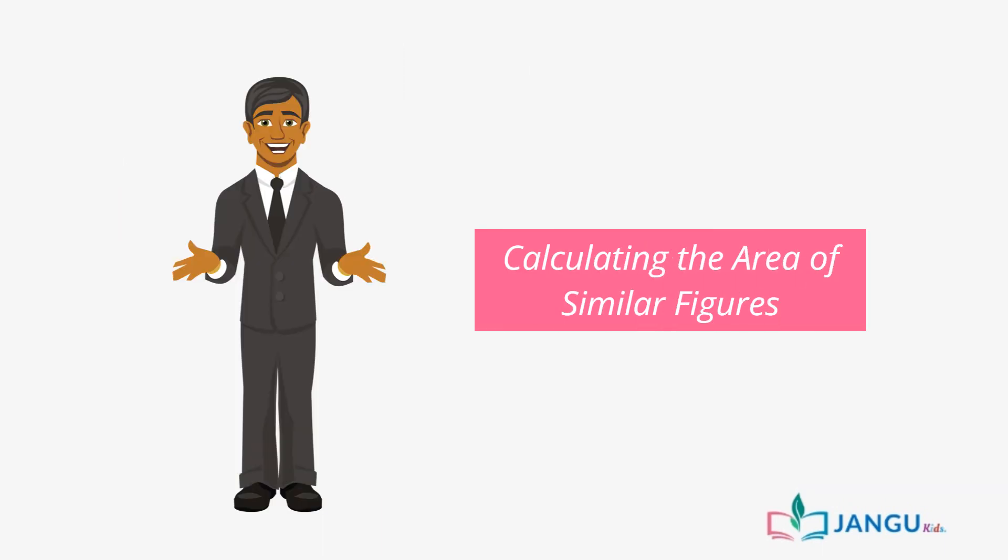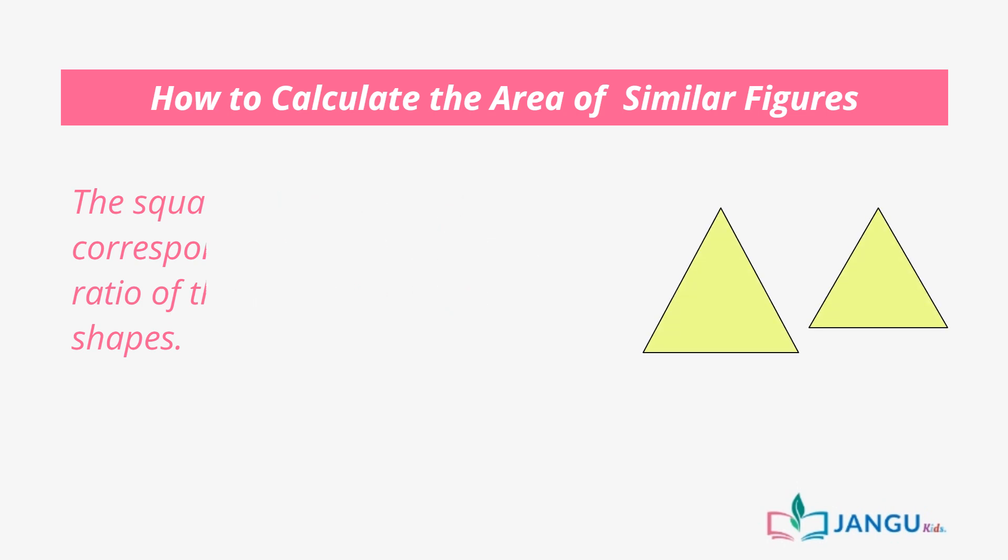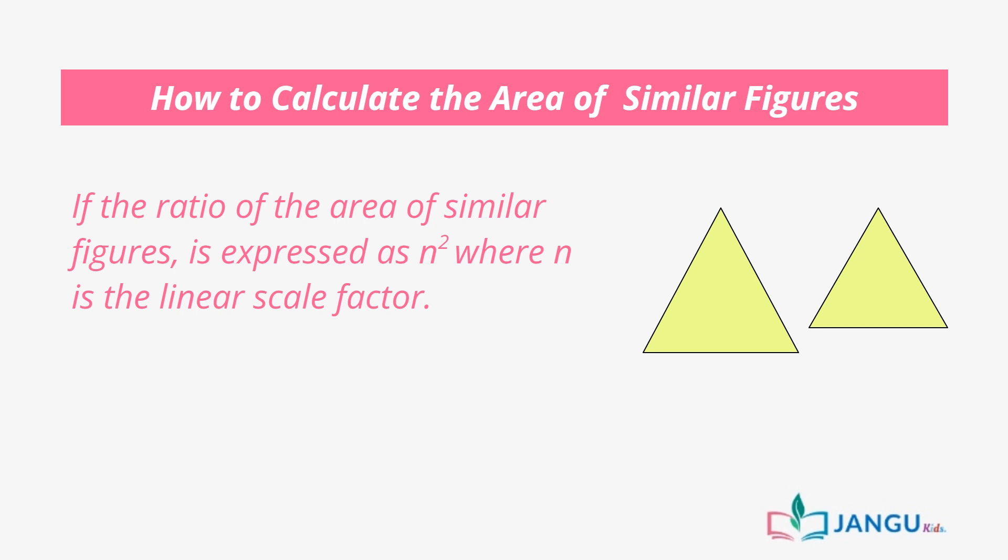As we have studied in previous lessons, the area of a flat shape or an object's surface is defined as the space occupied by the shape or object. The square of the ratio of the corresponding side lengths is the ratio of the area of two similar shapes. What that means is that if the ratio of the area of similar figures is expressed as n squared, where n is the linear scale factor.